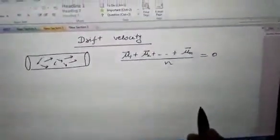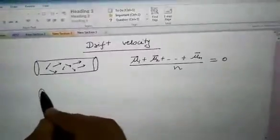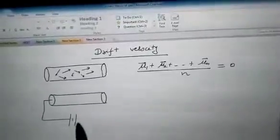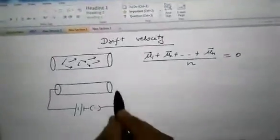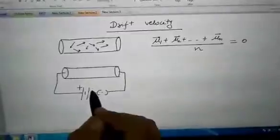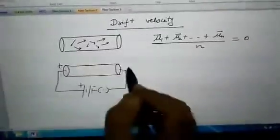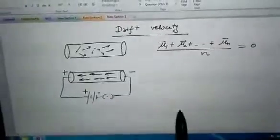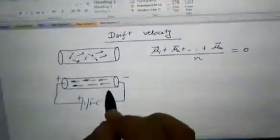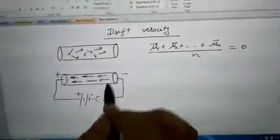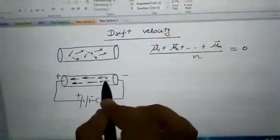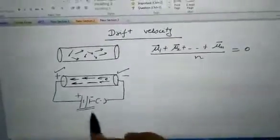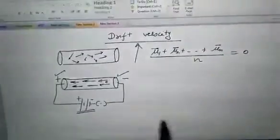If we connect this conductor with the battery and a key, so here this acquires positive and negative. The electron starts drifting from negative to positive. Now the average velocity with which the electrons get drifted from negative terminal to positive terminal under the influence of a battery is called drift velocity.